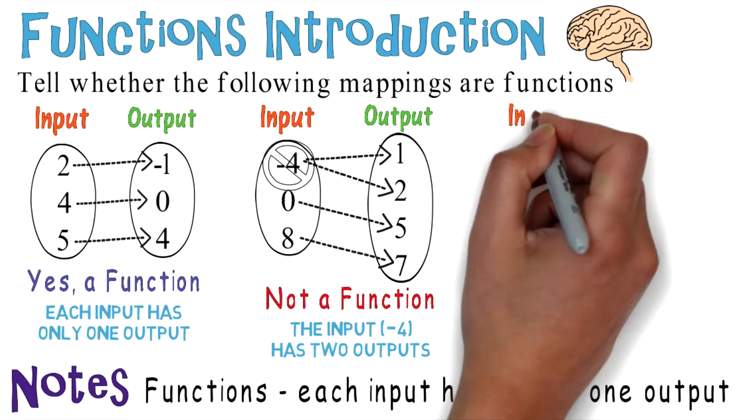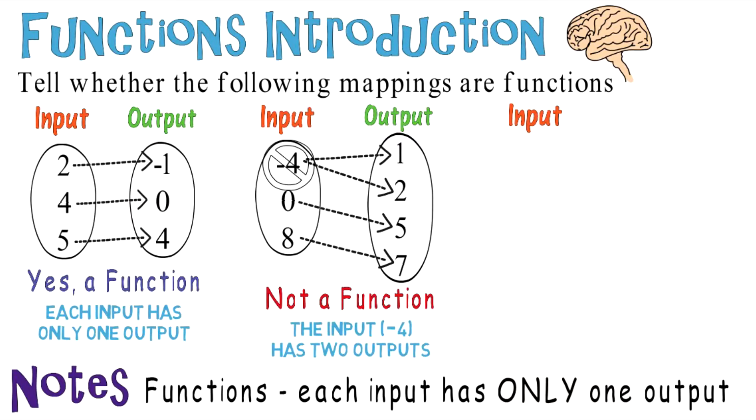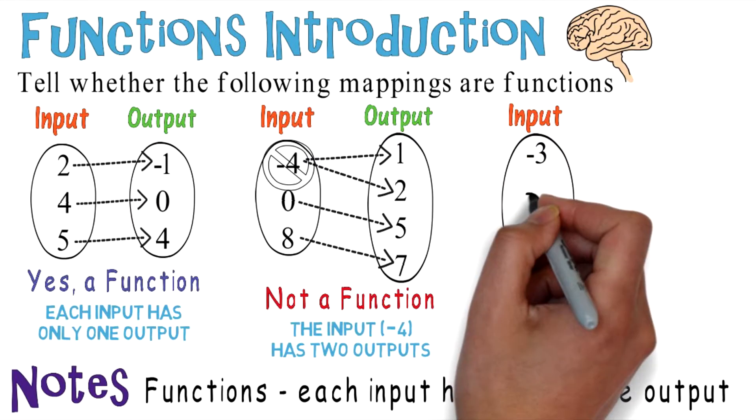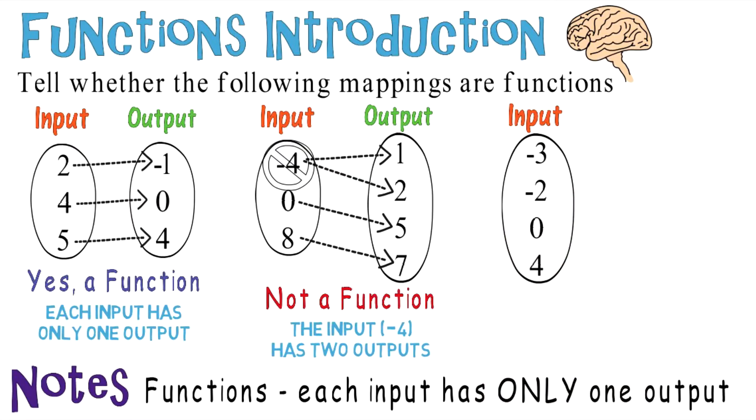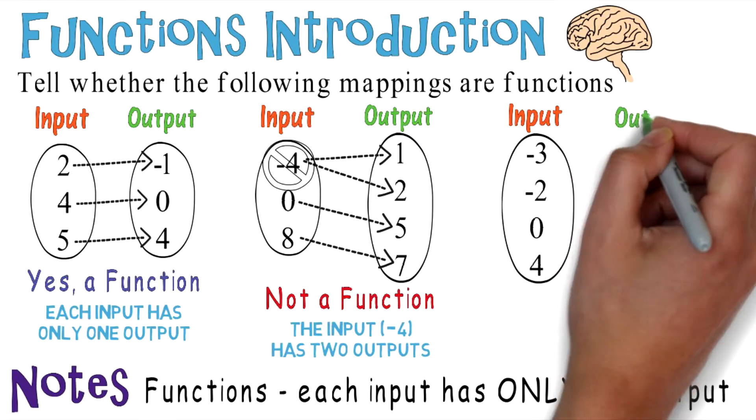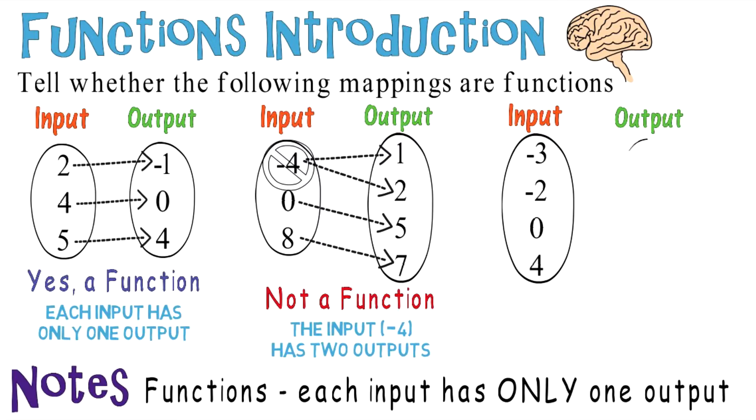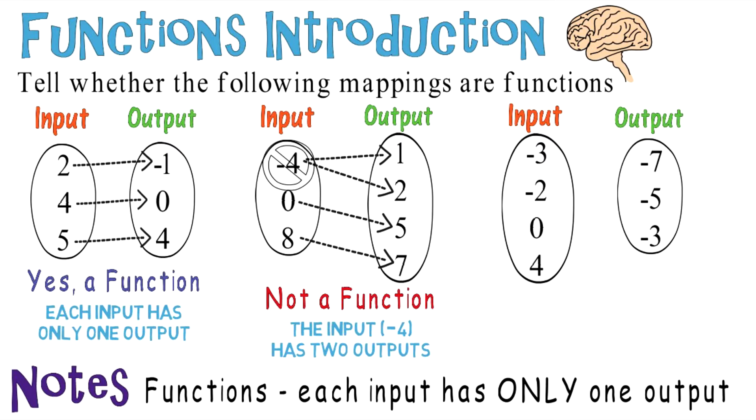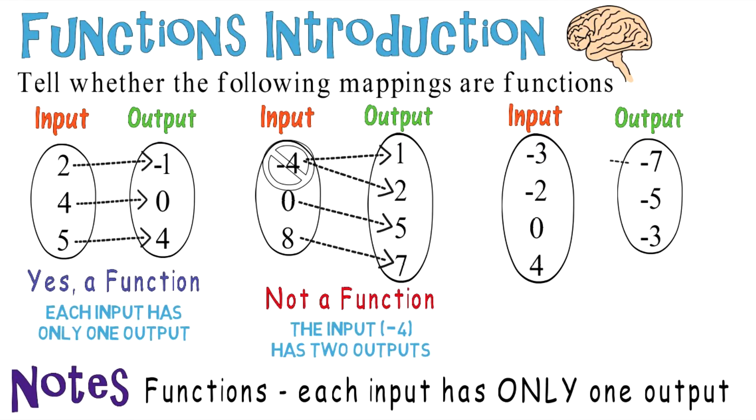Now let's move on to a third problem, where you're given the following inputs: negative 3, negative 2, 0, and 4. As your outputs, you're given negative 7, negative 5, and negative 3. Those inputs are mapped out just like this.